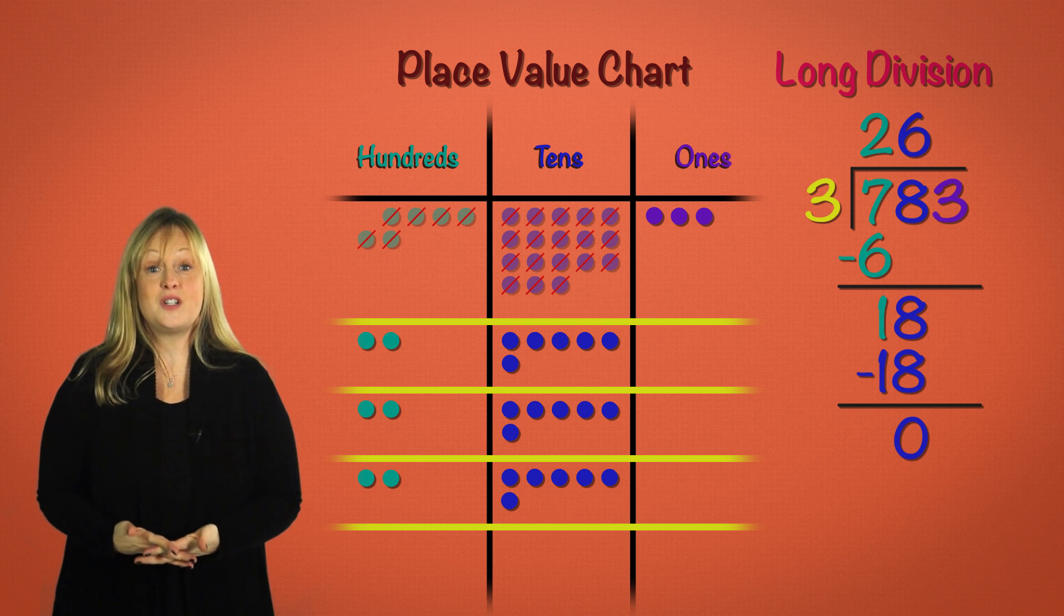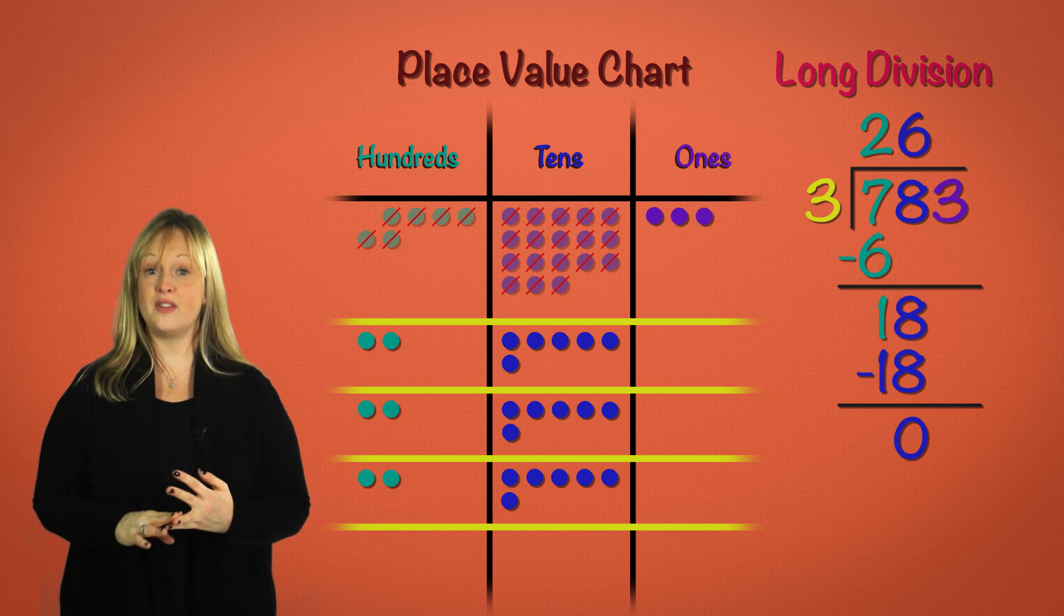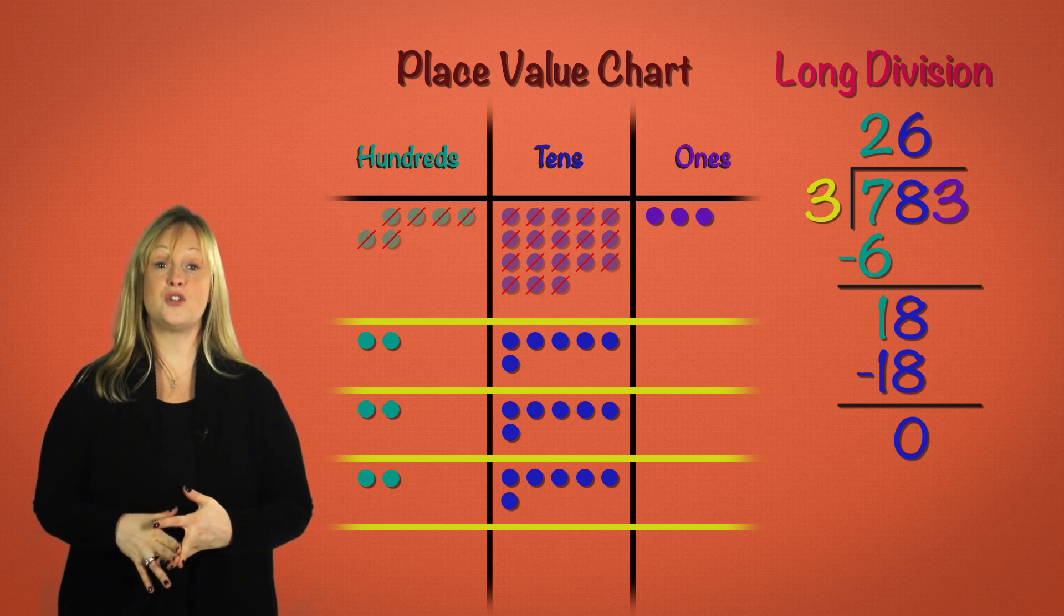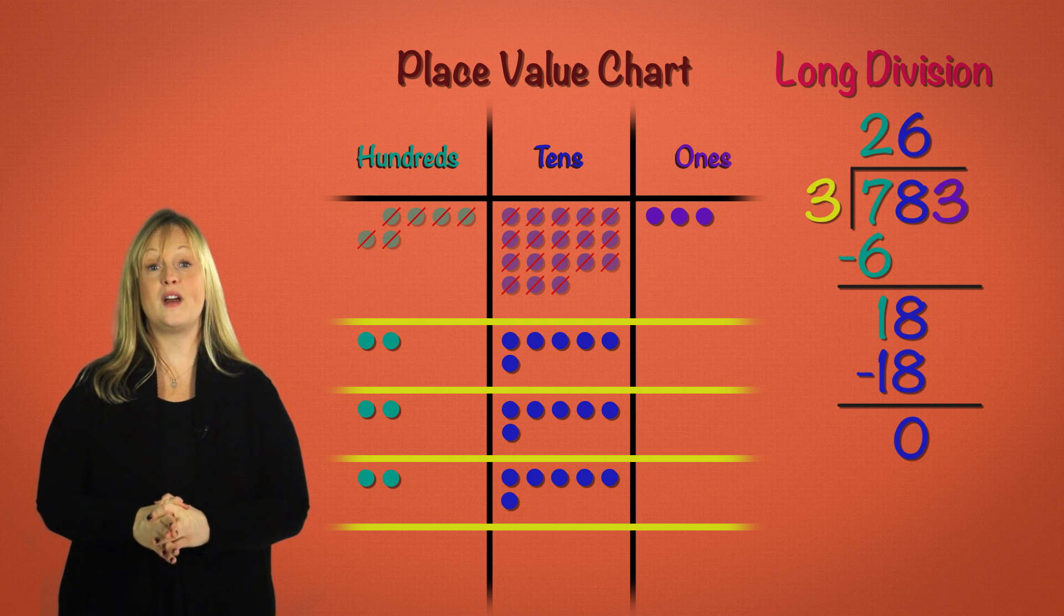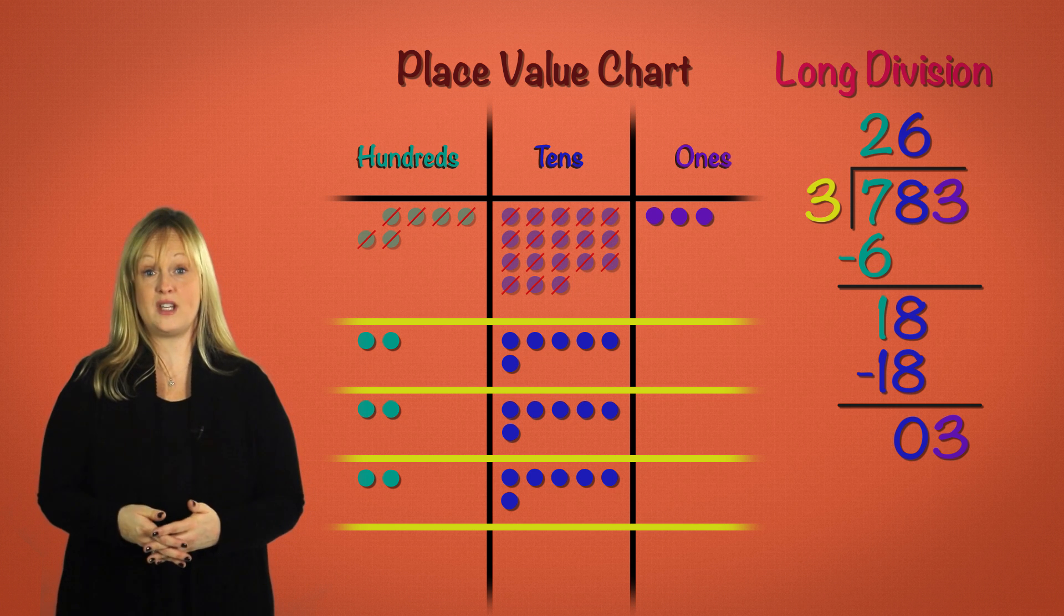Now what is left to distribute? We've distributed the hundreds, then the tens. Now we have to distribute the ones. We have three ones to distribute. Which division sentence represents how we should distribute these ones?